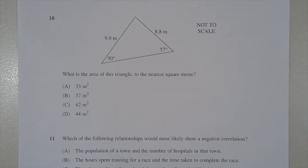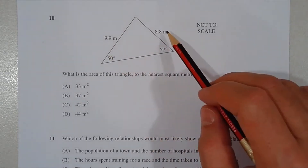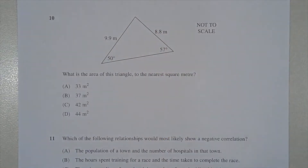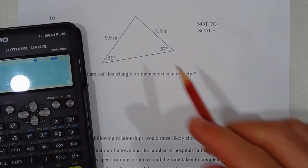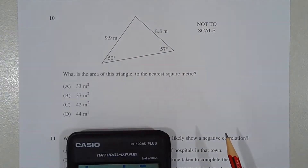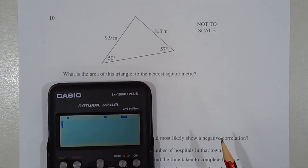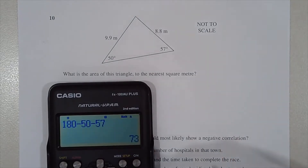Question 10: what is the area of this triangle to the nearest square meter? We have two known sides but the included angle is unknown. However, we have two other known angles, so we can find the third angle and apply the area rule: half ab times sine C. Using the angle sum property, 180 minus 50 minus 57 equals 73 degrees.